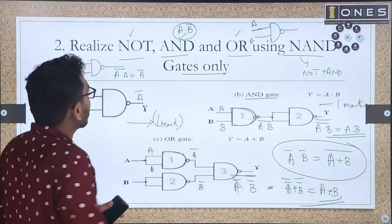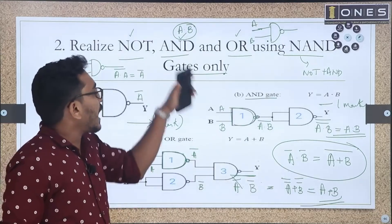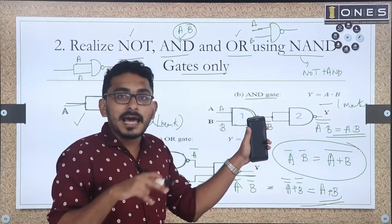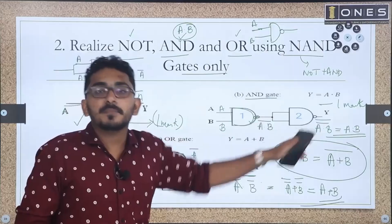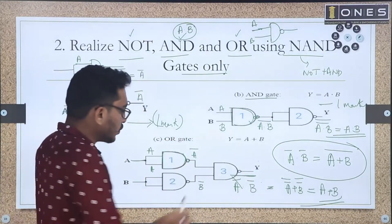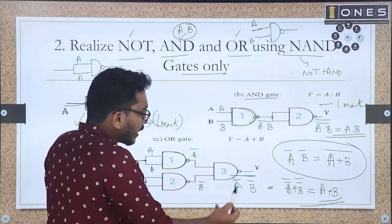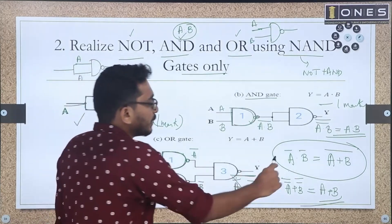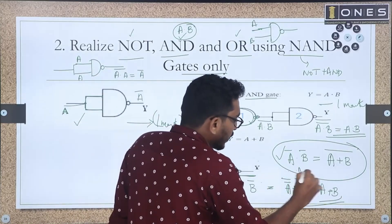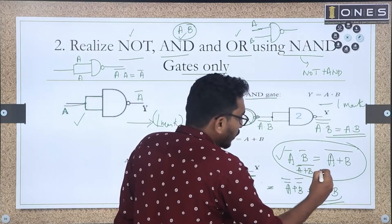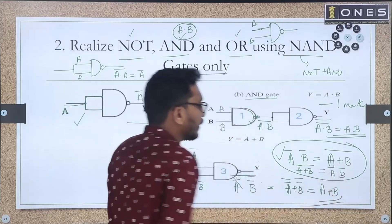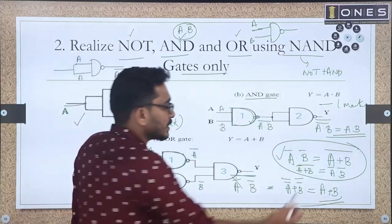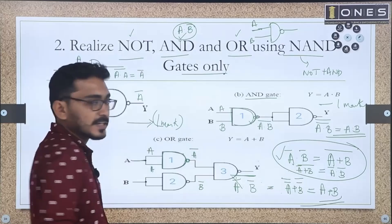To summarize: for NOT gate, a single NAND gate with both inputs shorted gives the complement. For AND gate, two NAND gates in series with a complemented output give A AND B. For OR gate, A-bar and B-bar are each found using NAND, then fed into a final NAND — by De Morgan's theorem, this gives A OR B.